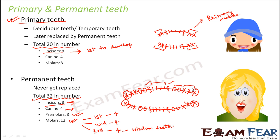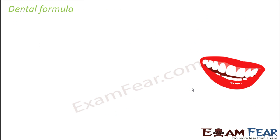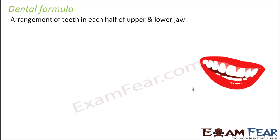Now let us talk about dental formula. A dental formula is not used to calculate anything — it just tells you how the teeth are arranged in a particular organism. For human beings, it represents the arrangement of teeth in each half of the upper and lower jaw.